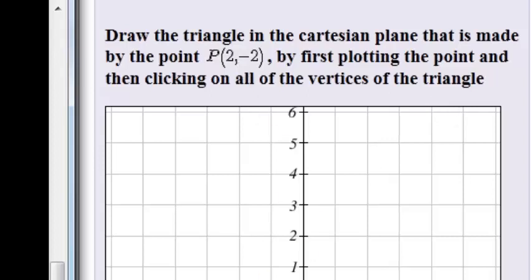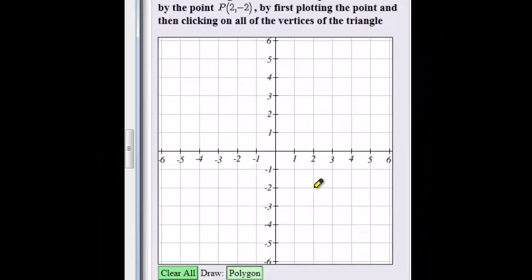So the point 2, that's x is 2, y is negative 2. So there is x equals 2 and y equals negative 2.